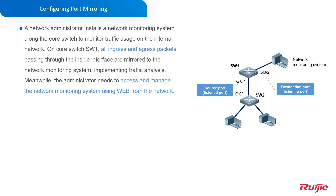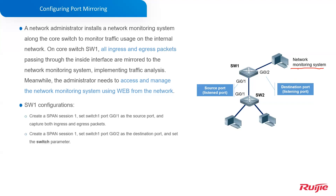Let's see the configuration. A network administrator installs a network monitoring system along the core switch to monitor traffic usage on the internal network, as shown in the figure. On core switch SW1, all ingress and egress packets passing through the inside interface are mirrored to the network monitoring system, implementing traffic analysis. Meanwhile, the administrator needs to access and manage the network monitoring system using the web. On SW1, we need to: create a SPAN session 1, set port G0/1 as a source port and capture both ingress and egress packets, and set port G0/2 as a destination port, and set the switch parameter.